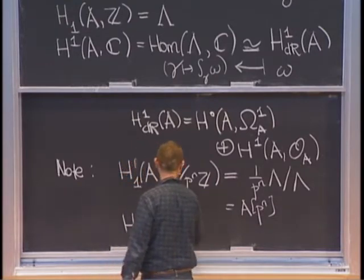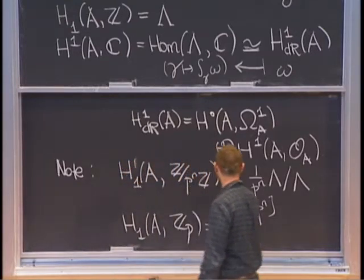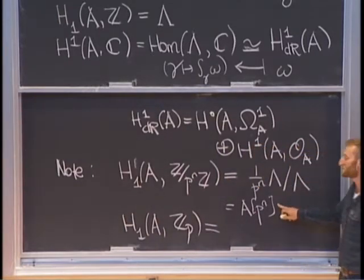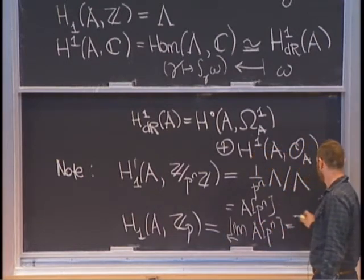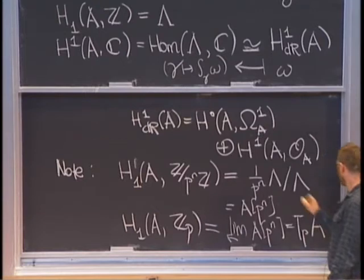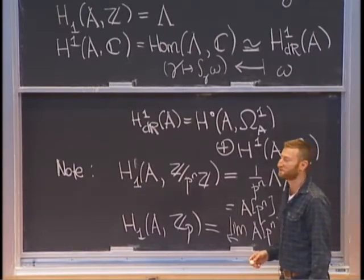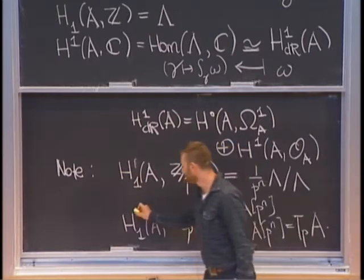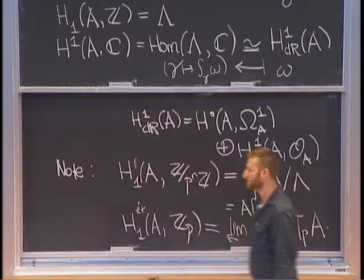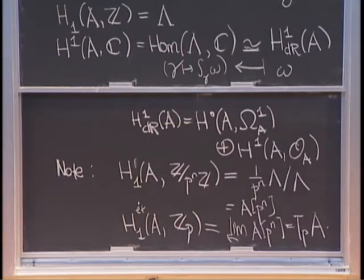So H₁ of A with ℤ_p coefficients winds up being the object known as the Tate module: the inverse limit of A[pⁿ] over n. So T_p A shows up as H₁ of the abelian variety. It's true in the topological sense, but it's also true if A is an abelian variety over some field of characteristic not p — then the étale cohomology works this way too, as dual to H¹_ét. This works even in a broader context than A over ℂ — it can be over any field.